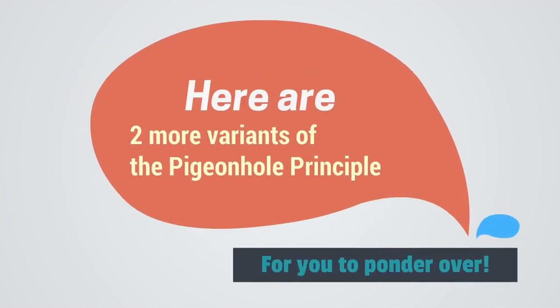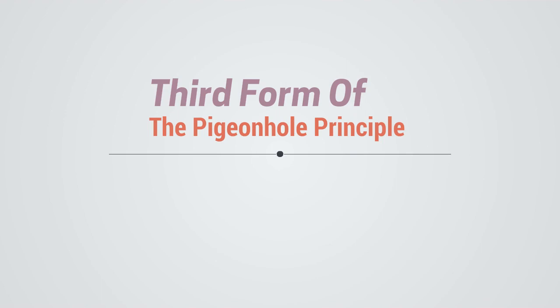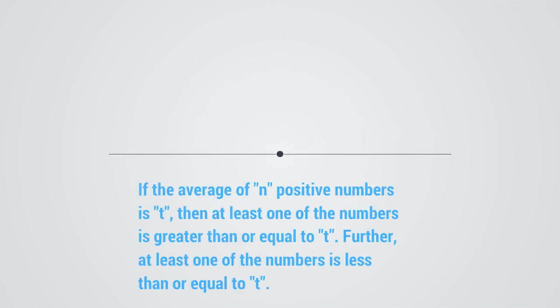Here are two more variants of the pigeonhole principle for you to ponder over. Here is the third form of the pigeonhole principle. If the average of n positive integers is t, then at least one of the numbers is greater than or equal to t. Further, at least one of the numbers is less than or equal to t.